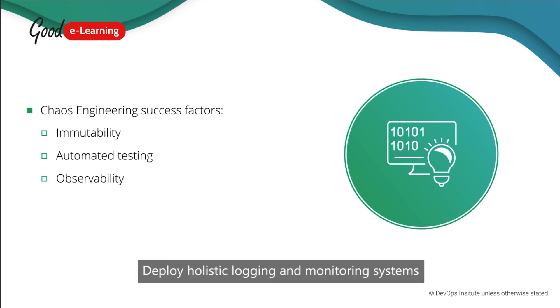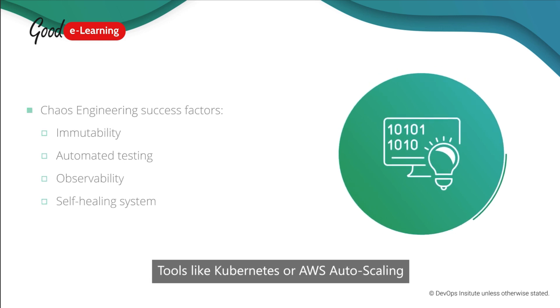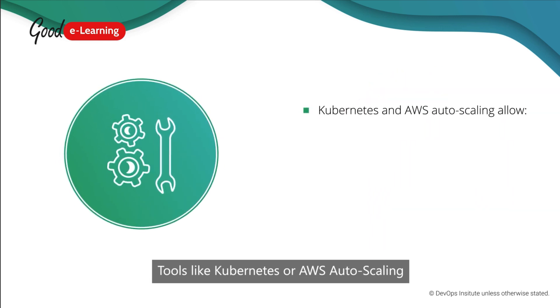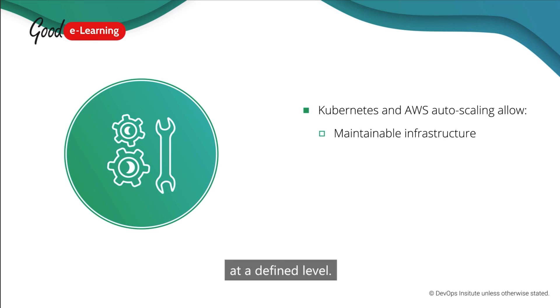Deploy holistic logging and monitoring systems to make the service observable and create self-healing infrastructure where appropriate. Tools like Kubernetes or AWS auto-scaling can be used to detect impaired instances of servers or containers and destroy, replace and maintain infrastructure at a defined level.